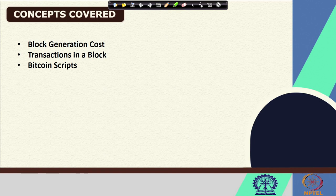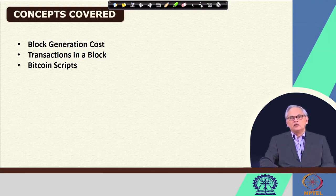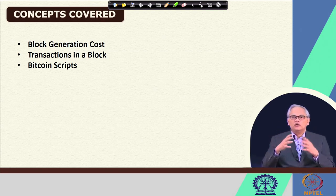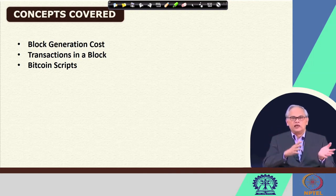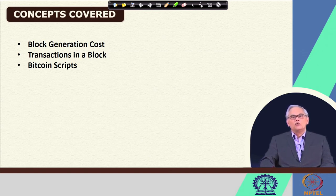We have said that there are blocks which are to be constructed by solving a cryptographic puzzle. We will see how much it typically costs in terms of resources to generate the blocks. We will also discuss, beyond the block headers from our last lecture, how transactions are actually included and organized in a block, and how those transactions are carried out — for example, Alice transfers 5 bitcoins to Bob. We will also cover bitcoin scripts, which are used for carrying out these transactions.